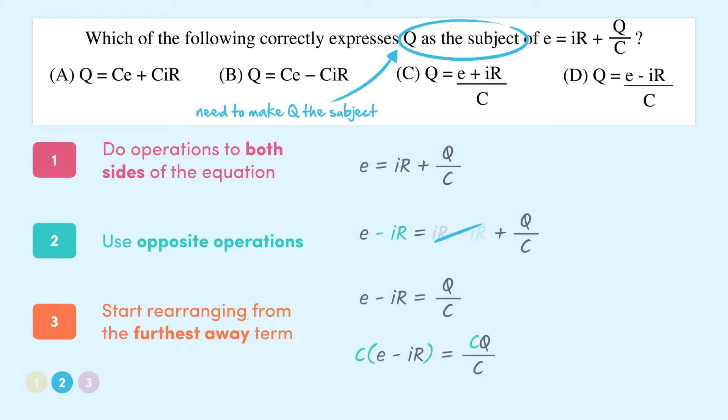So on the left hand side, C multiplies all of the terms. We express this using brackets, so we get C bracket E minus IR close bracket. On the right hand side we have C divided by C. Since this equals 1, we're just left with Q. So now we have Q as a subject of the equation, but you can see that our answer still doesn't match any of the given answers. The given answers have Q on the left hand side, so we can just switch each side of the equation around because no matter which expressions are on each side, they're still both equal to each other. Now we have Q equals C bracket E minus IR bracket.